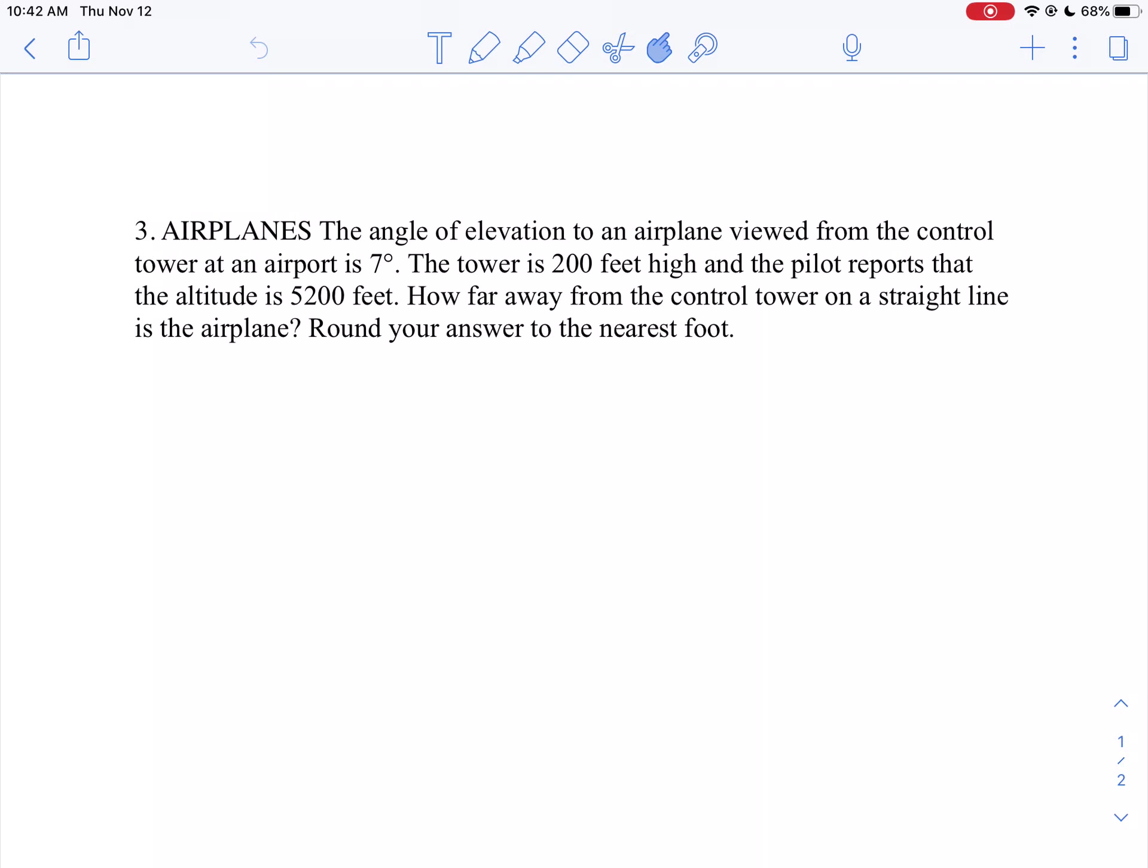The angle of elevation to an airplane viewed from the control tower at an airport is 7 degrees. The tower is 200 feet high and the pilot reports that the altitude is 5,200 feet. The question is, how far away from the control tower on a straight line is the airplane? Round your answer to the nearest foot.